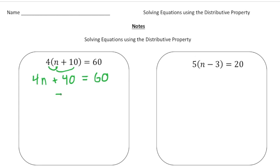And then I'm going to subtract the constant 40 from both sides. So we have four times n equals 20. And then divide both sides by four. And n ends up being five for this one.